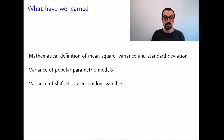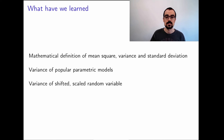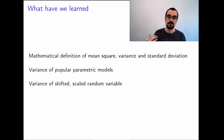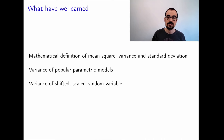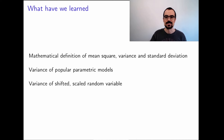In summary, we have learned the mathematical definition of the mean square, the variance, and the standard deviation. We derived the variance of some popular parametric models. And we learned how the variance changes under shifting and scaling of a random variable. Thank you very much.